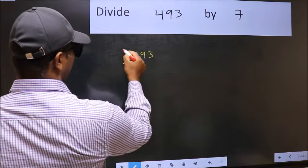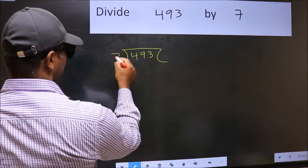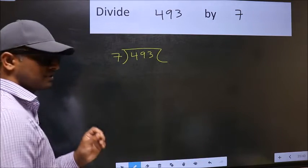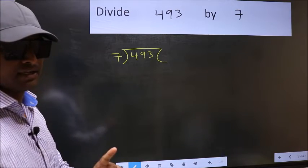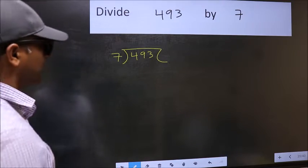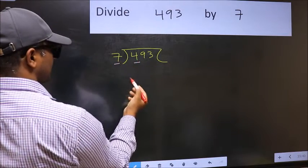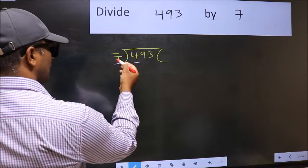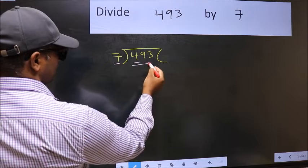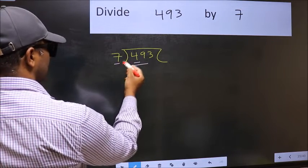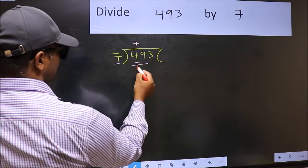493 and 7 here. This is step one. Next, here we have 4 and here 7. 4 is smaller than 7, so we should take two numbers, 49. When do we get 49 in the 7 table? 7 times 7 is 49.